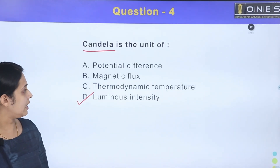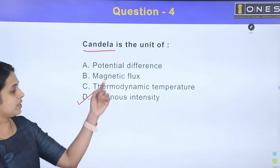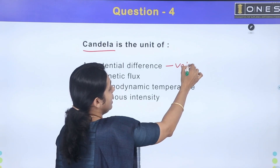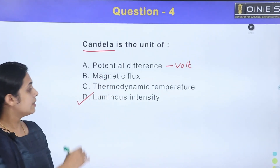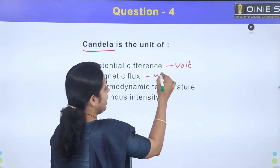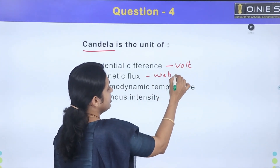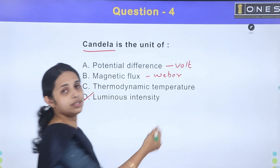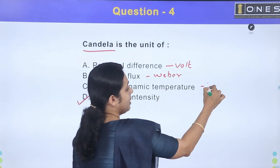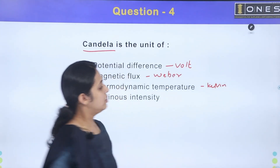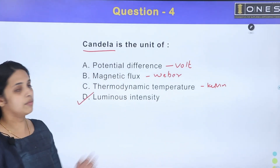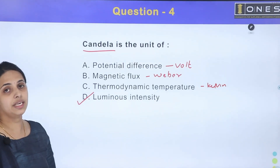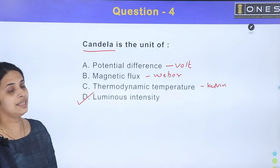Potential difference is measured in volts. Magnetic flux is measured in webers. Thermodynamic temperature is measured in kelvins — Kelvin is the thermodynamic temperature unit. So candela is the unit of luminous intensity — the answer is option D.